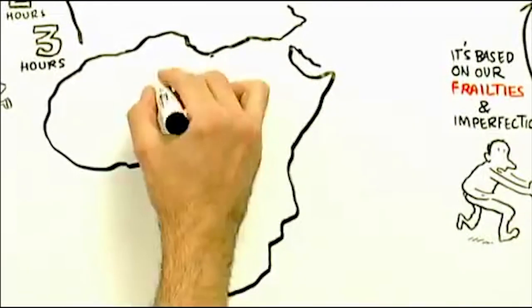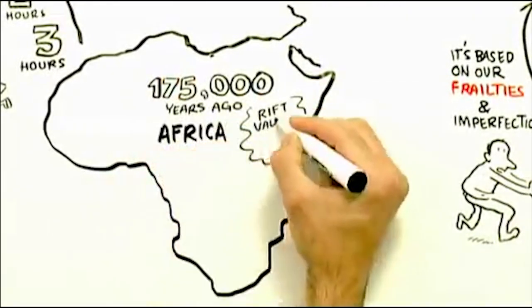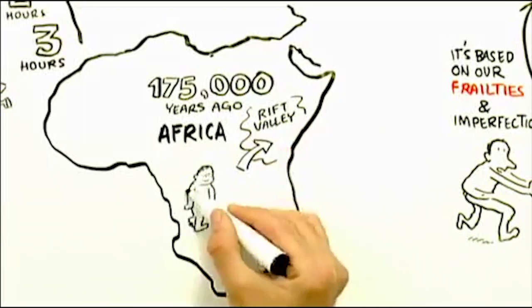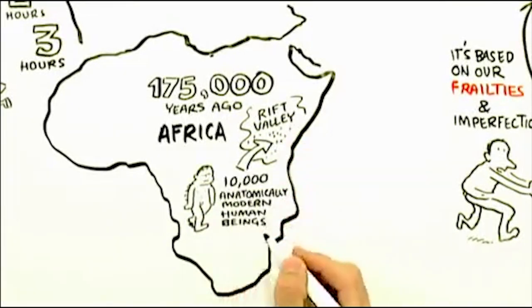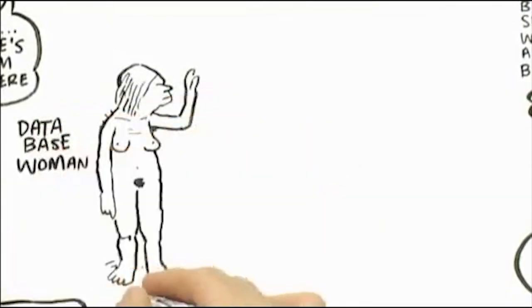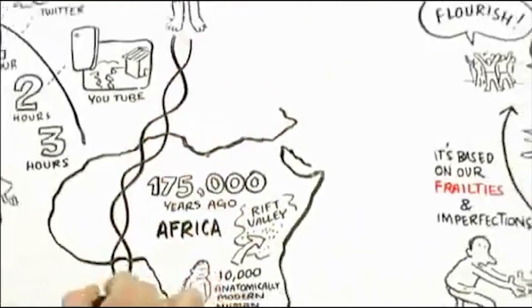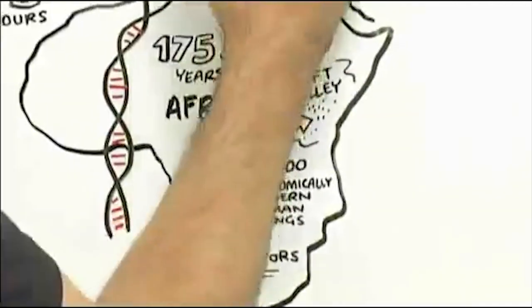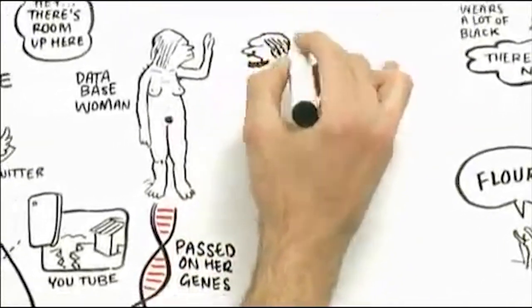Apparently, 175,000 years ago in the Rift Valley of Africa, there were about 10,000 anatomically modern human beings walking the grasslands, our ancestors. The geneticists located one database woman. It's a database line. Apparently, her genes passed everyone in this room tonight. The other ladies didn't make it. It gets even more strange.